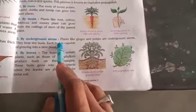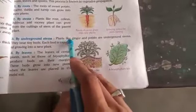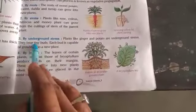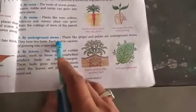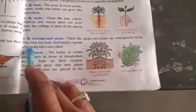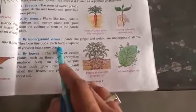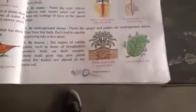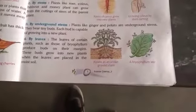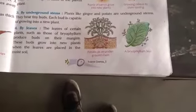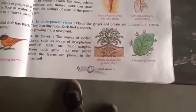Plants like ginger and potato are underground stems. They have tiny buds and these buds are capable of growing into new plants. Like adrak (ginger) and aloo (potato), they are small little structures that grow in the ground.